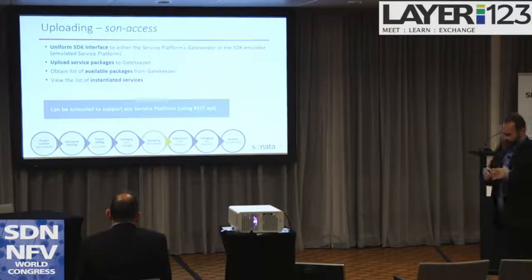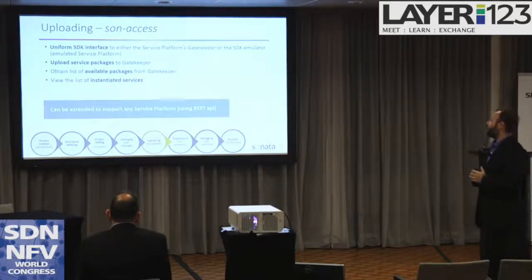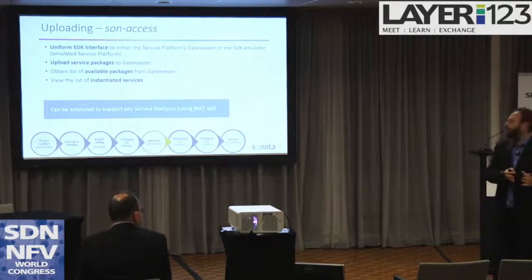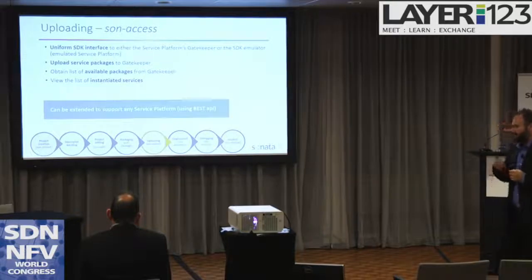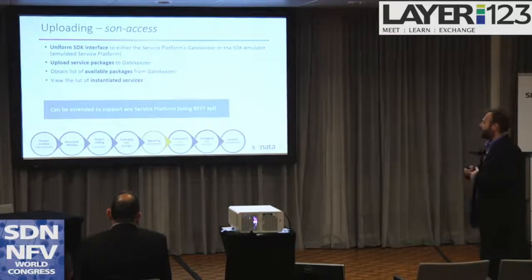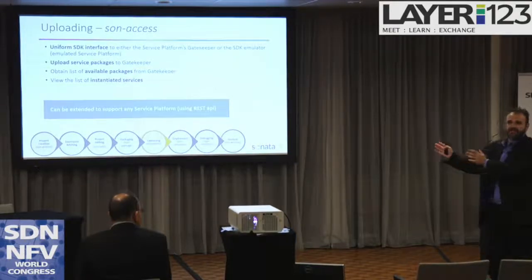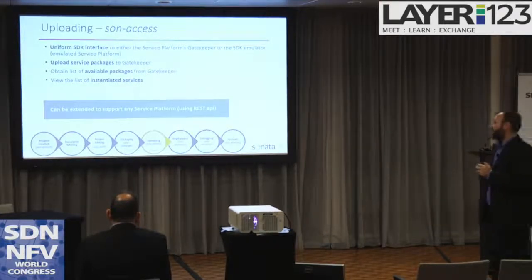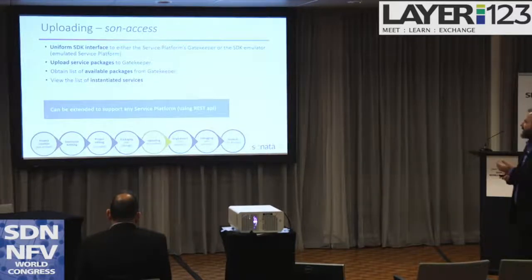We now come to the stage where the SDK has produced the output — we have the package and need to deploy. We use the Son Access component for that. We can either deploy the package on the Sonata platform, or deploy it on the emulator for continuous testing of the network service. All this can be extended to support any service platform — now we have the Sonata service platform, but it could easily be another service platform or another MANO orchestrator to deploy the package or run tests on a testing facility.